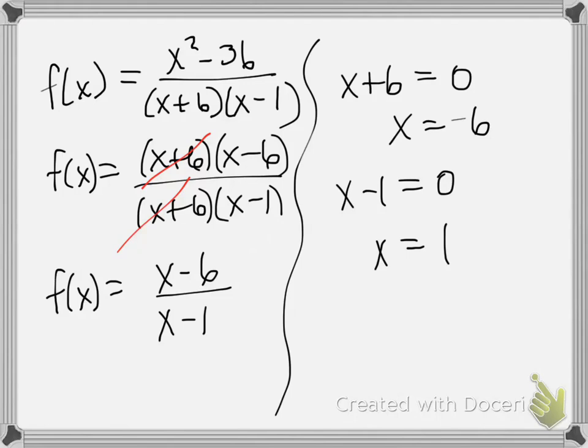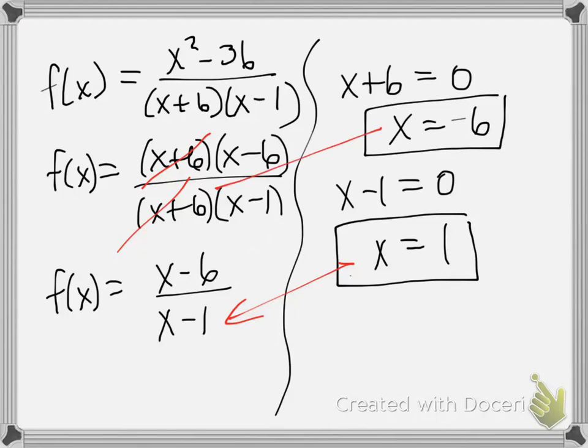What's the difference between the vertical asymptote and the hole in the graph? We're going to have a vertical asymptote at x equals 1. Why? Because we still have it in the denominator. We have the factor x minus 1 in the denominator. However, for x equals negative 6, we're going to have a hole in the graph because this is the factor that cancels. So we're going to have a hole in the graph at x equals negative 6 and a vertical asymptote at x equals 1.